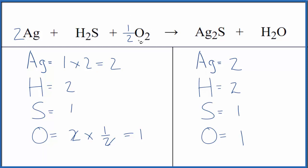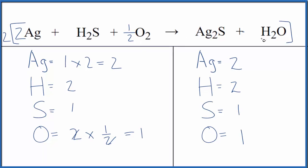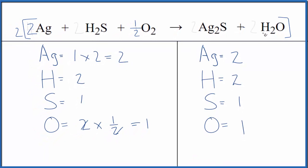Some teachers don't like to have the one half. What you could do is multiply everything by two. When you do that, you end up with the whole number form. We usually don't write the one by convention. So this is also a balanced equation. The ratios are correct.